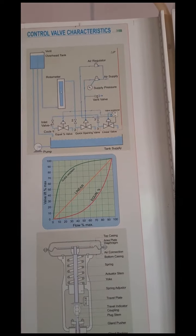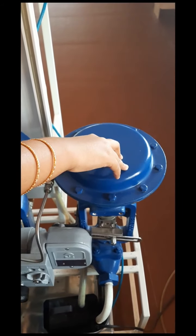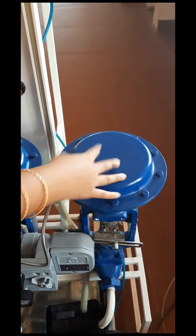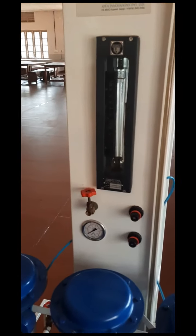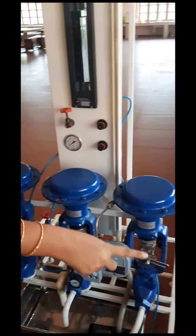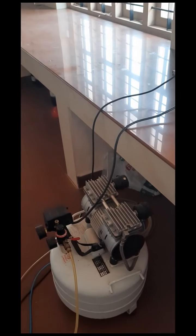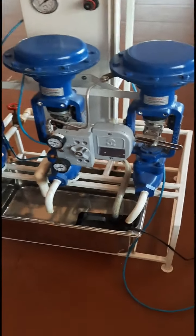The 1st valve is equal percentage, the 2nd is the linear valve, and the 3rd is the quick opening valve. There are 2 types of classification: air to open and air to close type valve. A compressor is attached to the system, and a submersible pump is also attached.